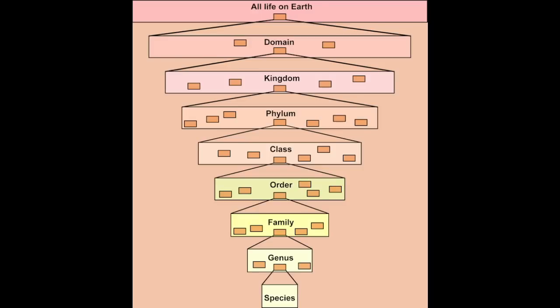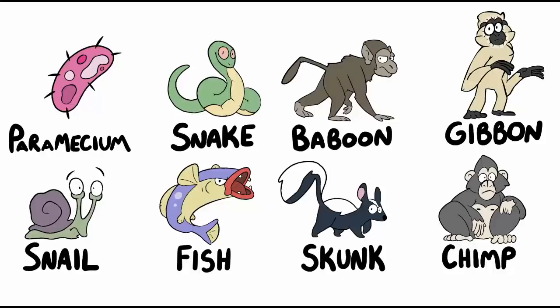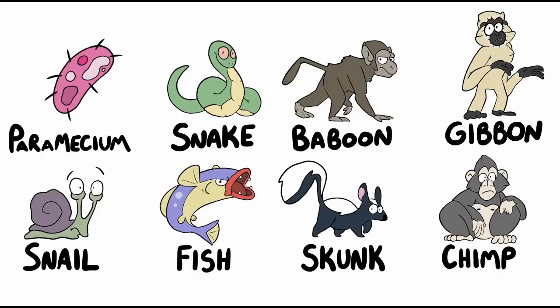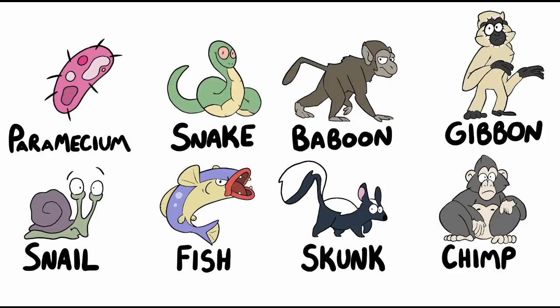Nested hierarchies refer to the nested nature of categorization that life tends to follow due to evolution. Let's illustrate how a nested hierarchy works using a list of extant, or still-living, organisms. In this group, we have numerous various creatures.